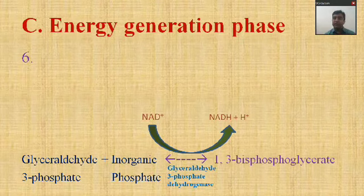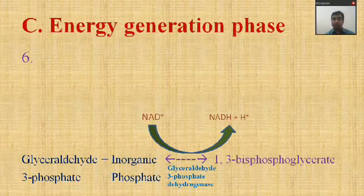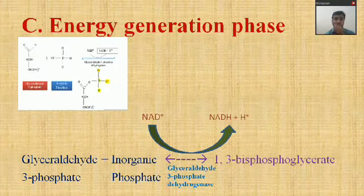Pyruvate enters into the Krebs cycle, whereas the NADH produced in reaction six enters into the ETC. Reaction six is catalyzed by the enzyme glyceraldehyde-3-phosphate dehydrogenase, forming the energy-rich compound 1,3-bisphosphoglycerate.